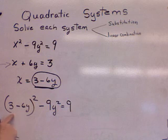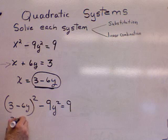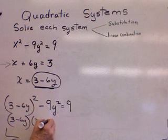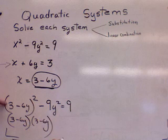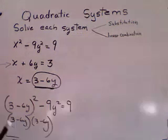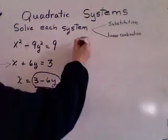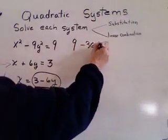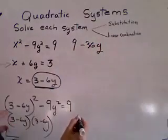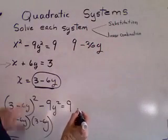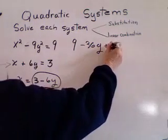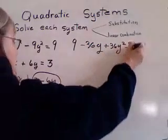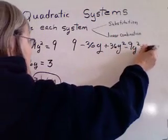I still have a little bit of a mess here. I need to multiply 3 minus 6y times 3 minus 6y. And most of you can do this in your head, so let's do that. Okay, so multiplying this out, I get 9 minus 36y. 3 times 6 is 18 times 2. You get minus 36y plus 36y squared.